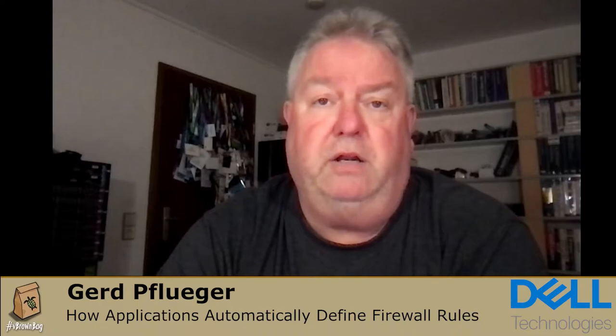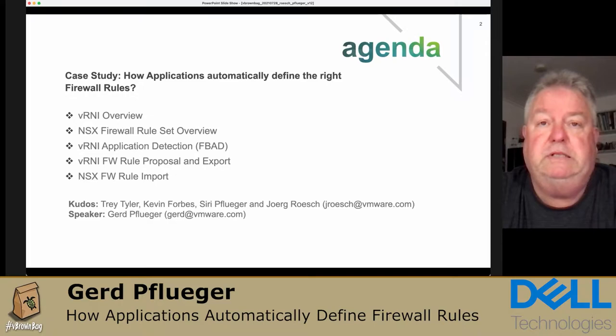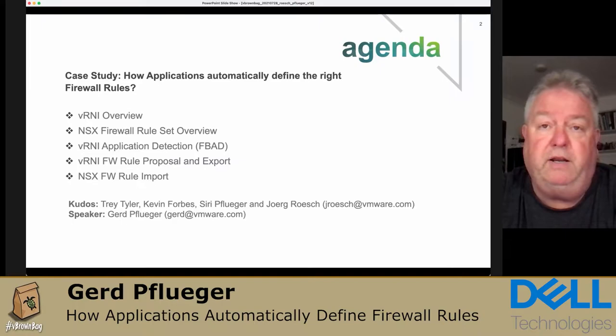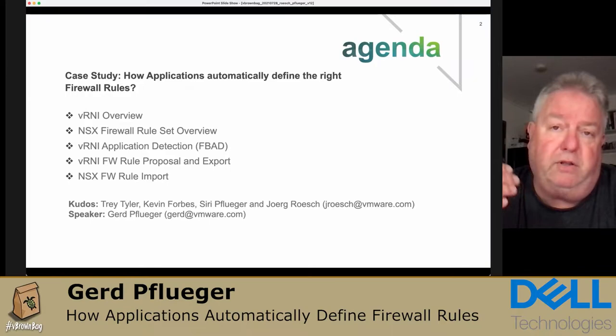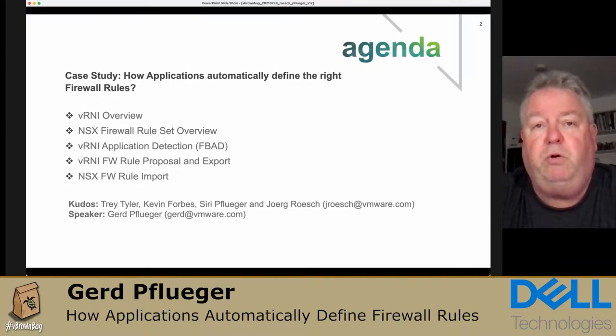So the agenda looks like this. I will talk a bit about vRNI, which is a VMware product called vRealize Network Insight, but really briefly. And then I will have a look at how to define firewall rules in NSX. And then I will talk about the case study — how we create this kind of application, how we create recommendations for the firewall rules, and then how we import this into the NSX firewall.